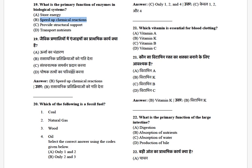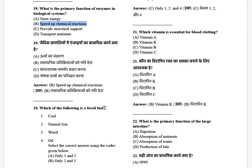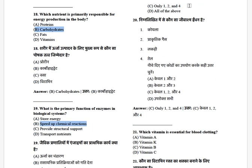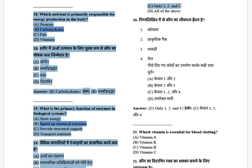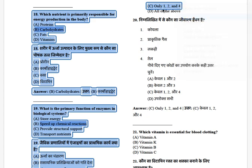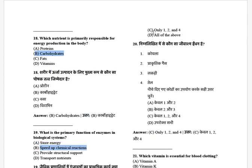Which of the following is a fossil fuel? The options are: coal, natural gas, wood, and oil. The answer is C — options 1, 2, and 4 (coal, natural gas, and oil).